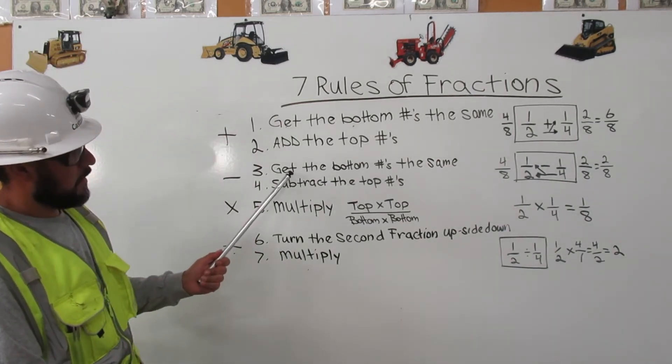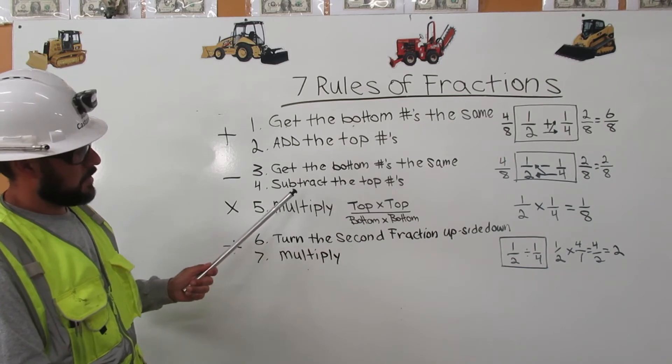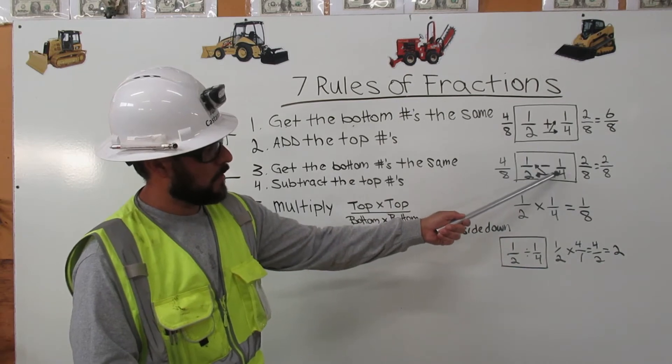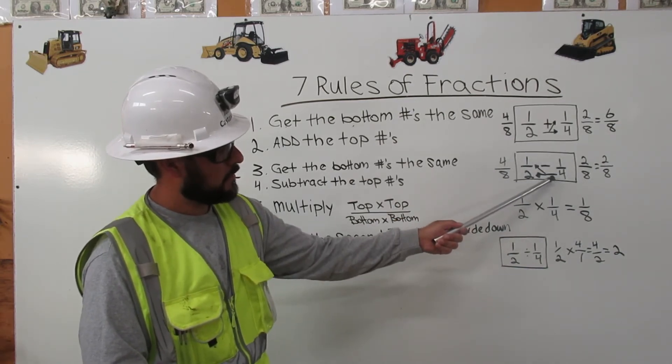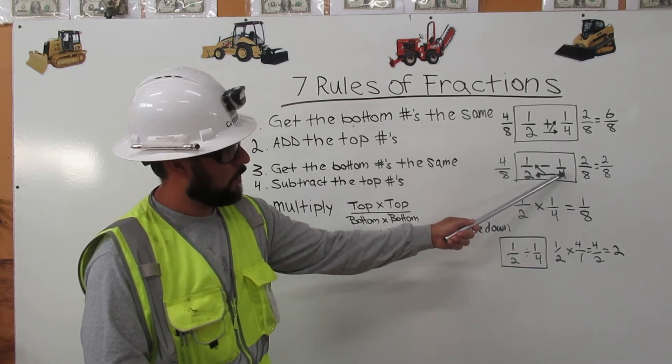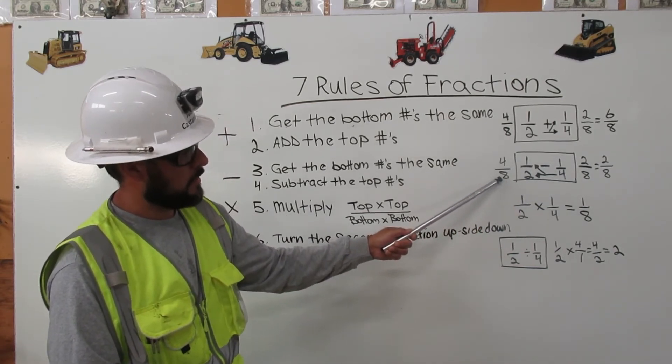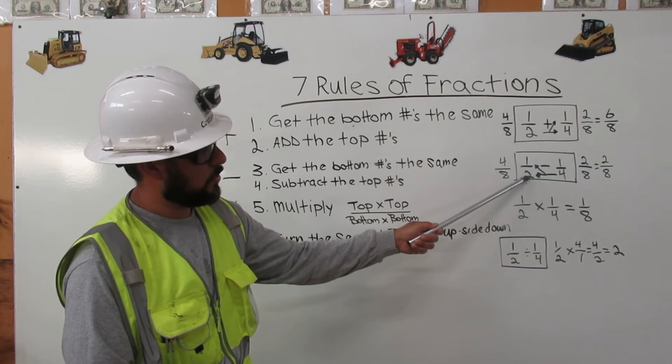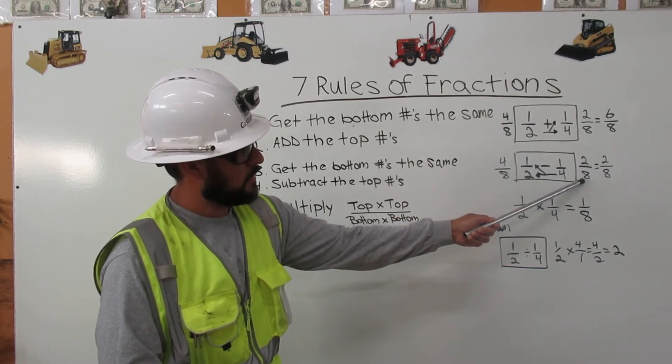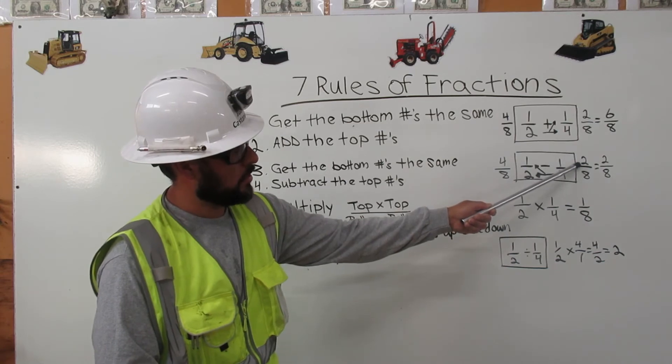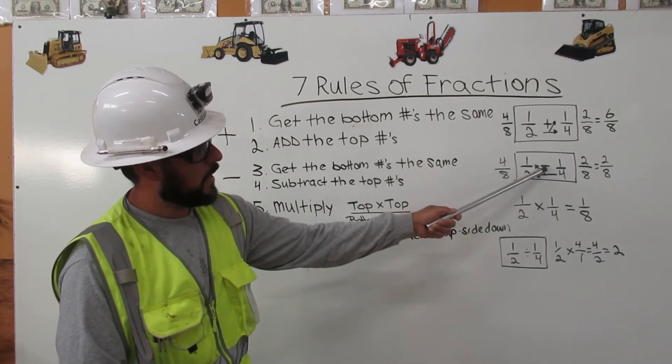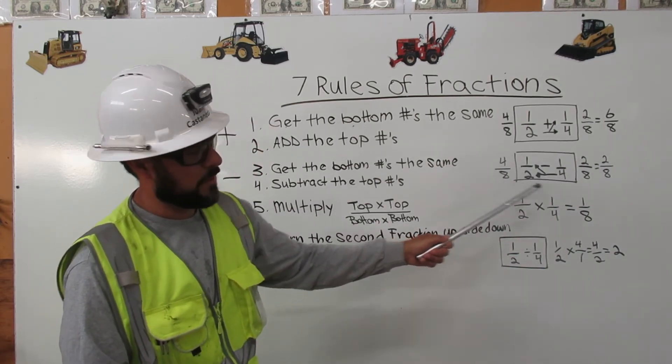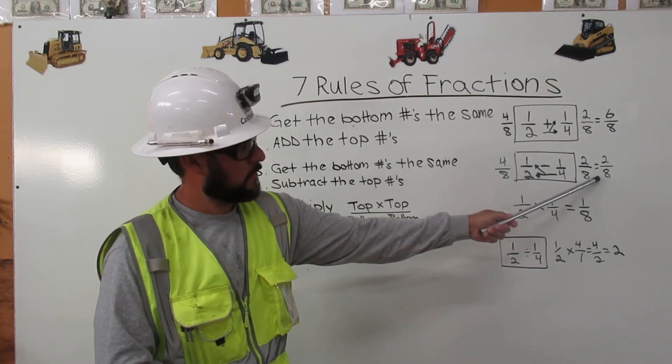Subtraction. Get the bottom numbers the same. Subtract the top numbers. Half minus one-fourth, box it, cross multiply. Four times two is eight. Four times one is four. Two times four is eight. Two times one is two. Four minus two is two. Carry the eight over. Answer is two-eighths.